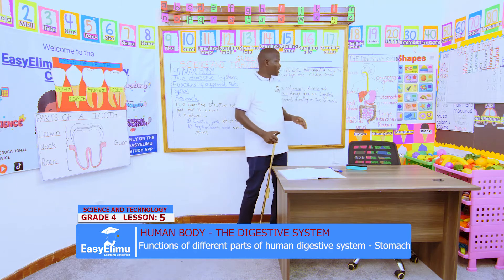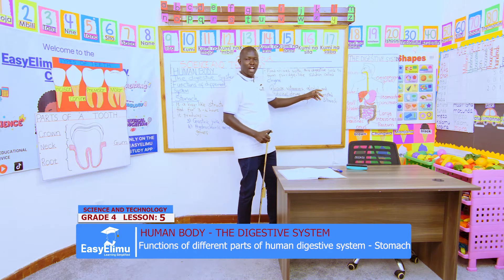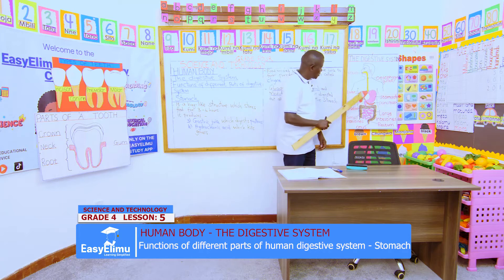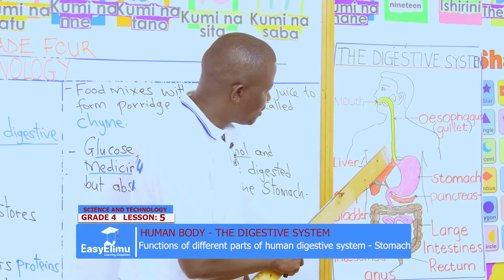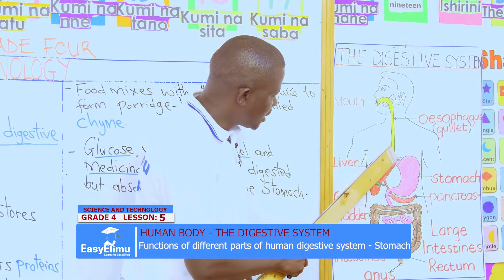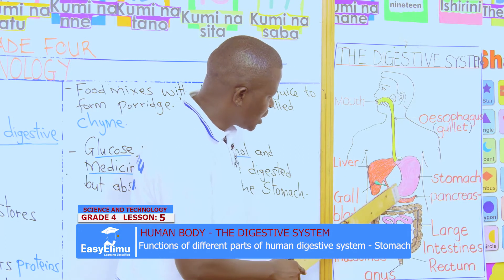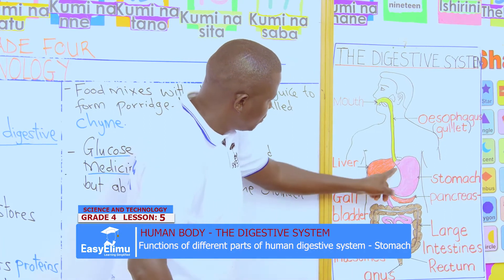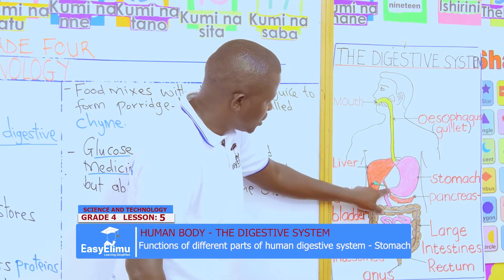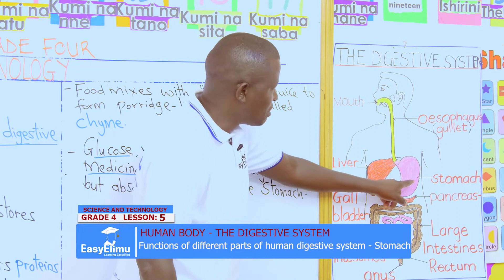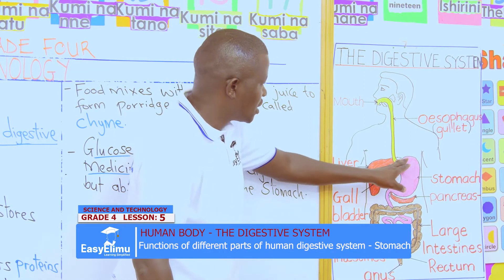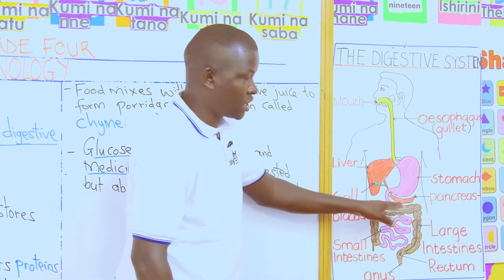In pairs, I want us to observe the chart on the digestive system. We'll see that immediately after the esophagus, we have something here which looks like a bug — a big one, from ear to ear. This is the stomach. We say the stomach is a bug-like structure.